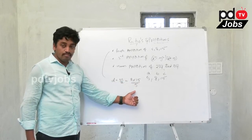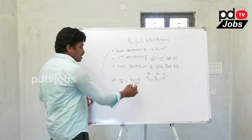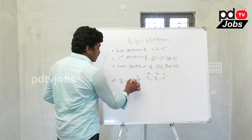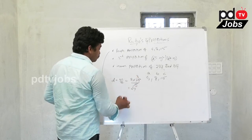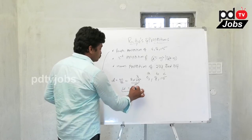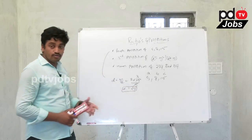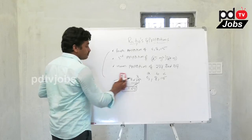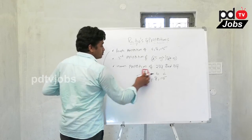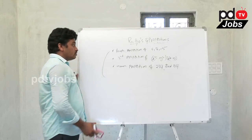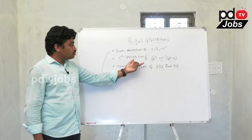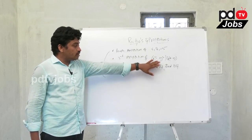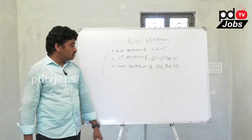So bc/a equals 8 into 15 divided by 5. 5 cancels into 15 three times, and 8 threes are 24. So the fourth proportion is 24. Next: find the third proportion of x² - y² and x - y.